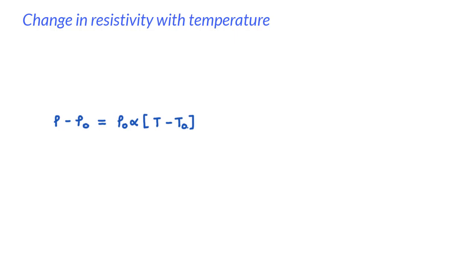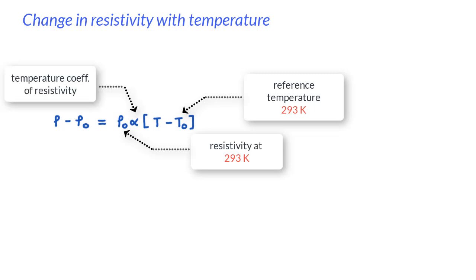Here T not is the reference temperature often taken as 293 Kelvin and Rho not is the corresponding resistivity at 293 Kelvin and alpha here is the temperature coefficient of resistivity and the value is taken in such a way that the equation gives good agreement with experiment for temperatures in the chosen range.